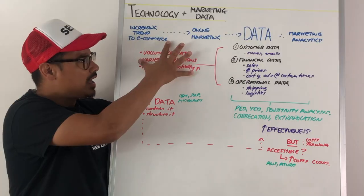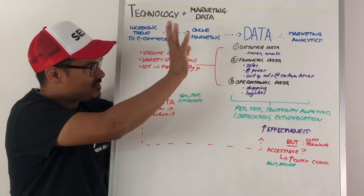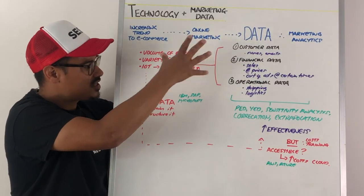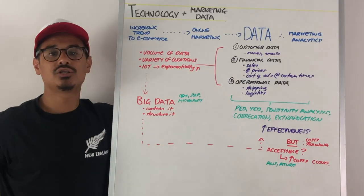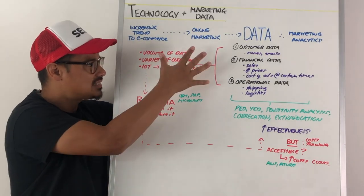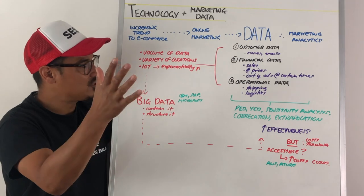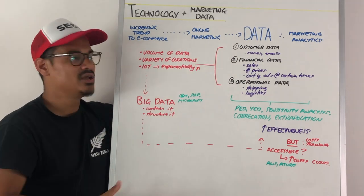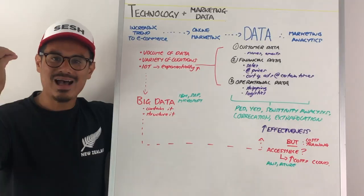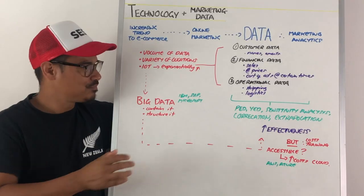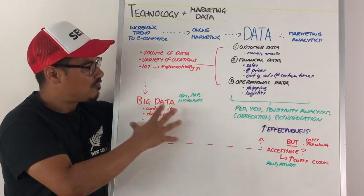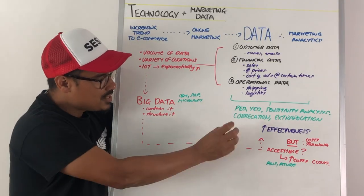So this is where, if the marketing analytics team want to look at this data, they might need to introduce big data. What big data does is it contains that data and also structures it in a better way, so it's all in one place and can therefore be analysed. IBM, SAP, and Microsoft are examples of big data companies.